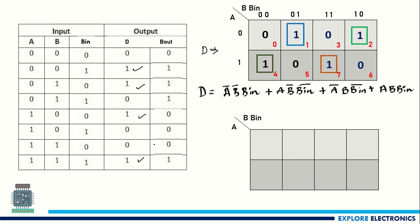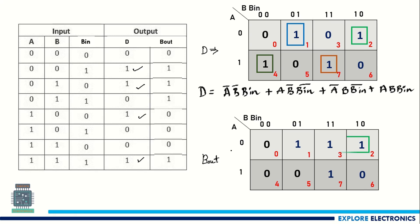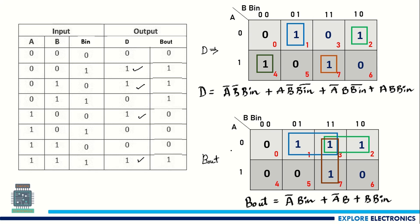Similarly, if we write the K-map for B_out, we group the 1s together: grouping one pair, then another pair, and another pair. This gives the output B_out = A_bar·B_in + A_bar·B + B·B_in.